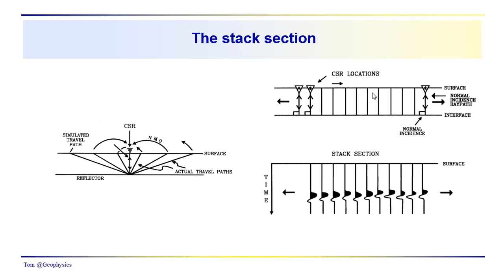We're just showing the compilation in a simplified schematic sense of all the source receiver combinations that provide information from common reflection points along a particular surface. We're still keeping things simple by looking at a horizontal reflector here. These are normal incidence.